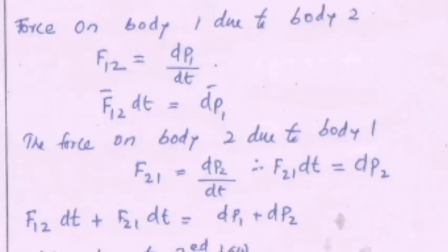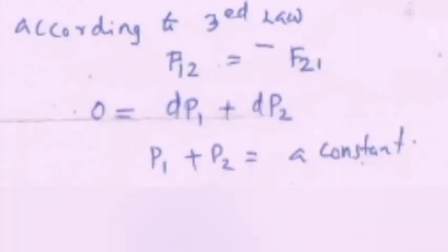The force on body 2 due to body 1, F₂₁ equals dp₂ by dt. Therefore F₂₁ dt equals dp₂. F₁₂ dt plus F₂₁ dt equals dp₁ plus dp₂. According to third law, F₁₂ equals minus F₂₁. 0 equals dp₁ plus dp₂. p₁ plus p₂ equals a constant.